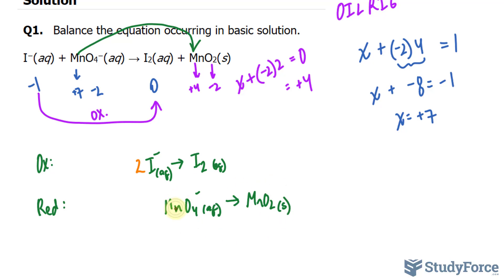In this reaction, we have a balance in Mn, but we have four oxygens and two oxygens. To balance this out, I'll write down plus 2H2O. That is how you balance oxygens in these half reactions. Now we have four oxygens on the right side and four on the left side,